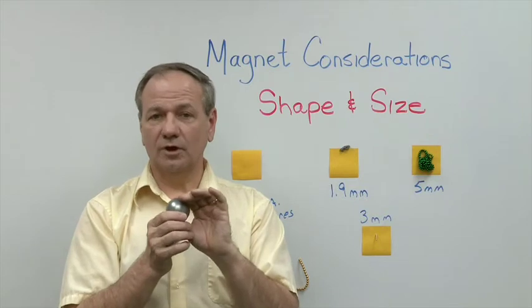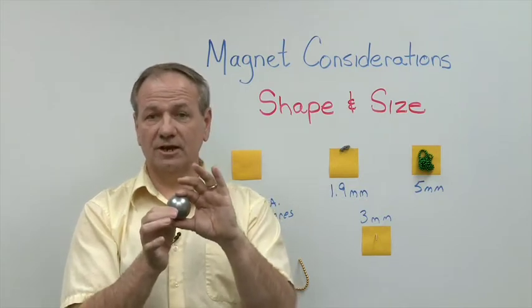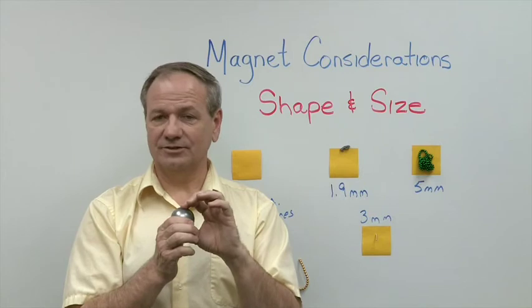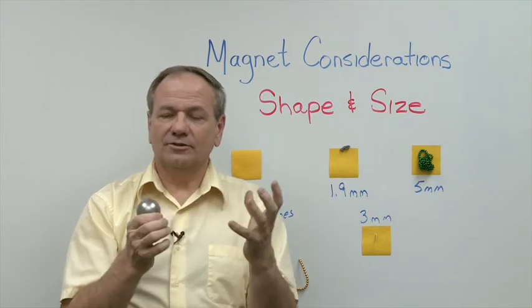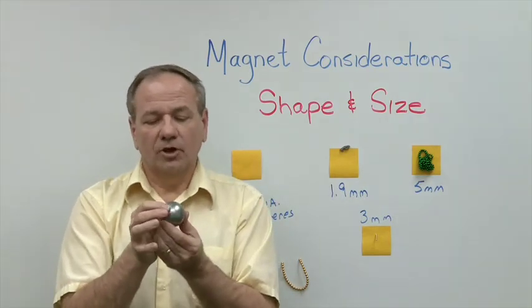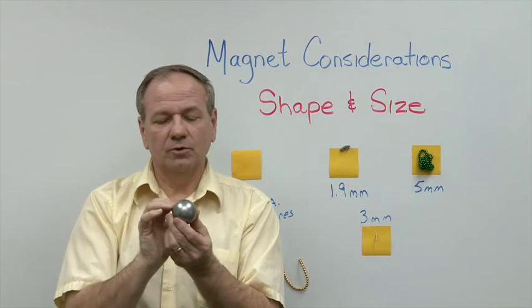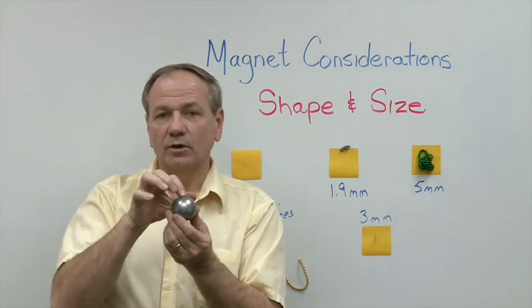As opposed to a 2 inch cube - this is 2 inches in diameter - a 2 inch cube only produces about 6,000 gauss. So why the difference? Well as the magnetic flux travels through the sphere it focuses and concentrates on the one point.